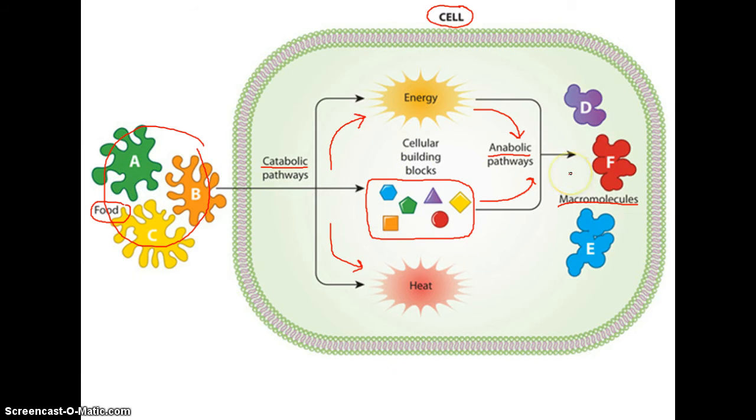It's a catabolic process when we're going from a big molecule to the smaller pieces and we're releasing energy. Then it's an anabolic process when we're using that energy in order to take these smaller pieces, stick them back together, and make bigger molecules once again. Both catabolic pathways and anabolic pathways have enzymes that accelerate those processes so that they can occur when we want them to and in a very timely and efficient manner.